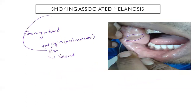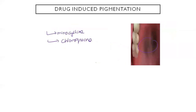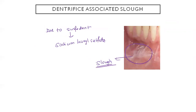Smoking-associated melanosis is brown, diffuse, and most common on the anterior gingiva — reversible on cessation. Melanotic macule is the most common melanocytic lesion, post-inflammatory or associated with Peutz-Jeghers syndrome, which involves benign intestinal polyps. Drug-induced pigmentation can occur with chloroquine or minocycline. Hairy tongue results from elongated filiform papillae. Dentifrice-associated slough is caused by surfactants like sodium lauryl sulfate in toothpaste.